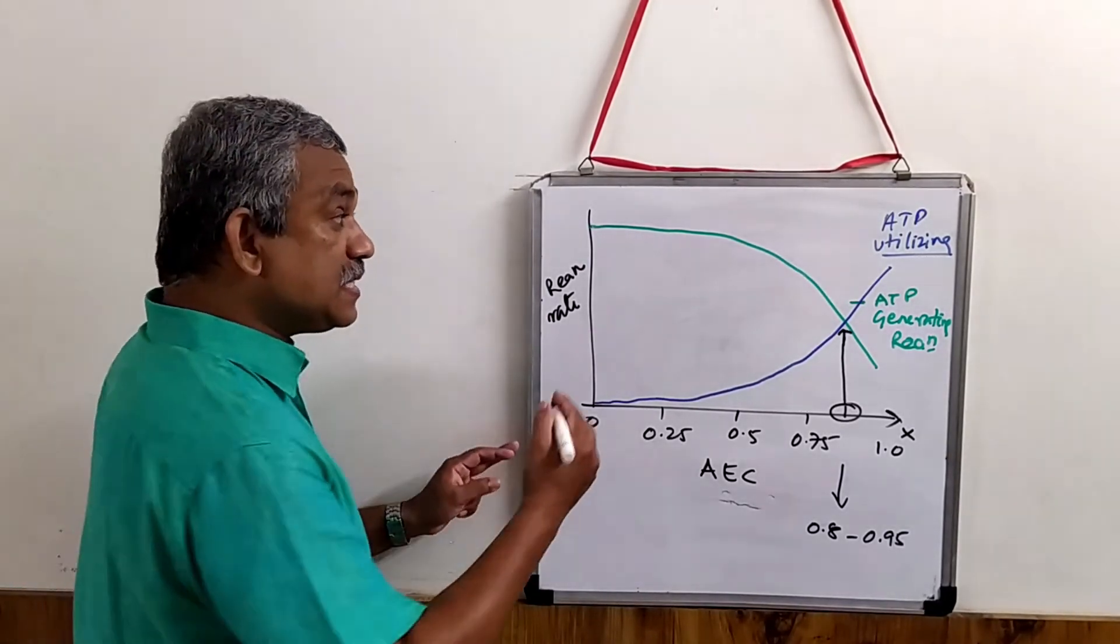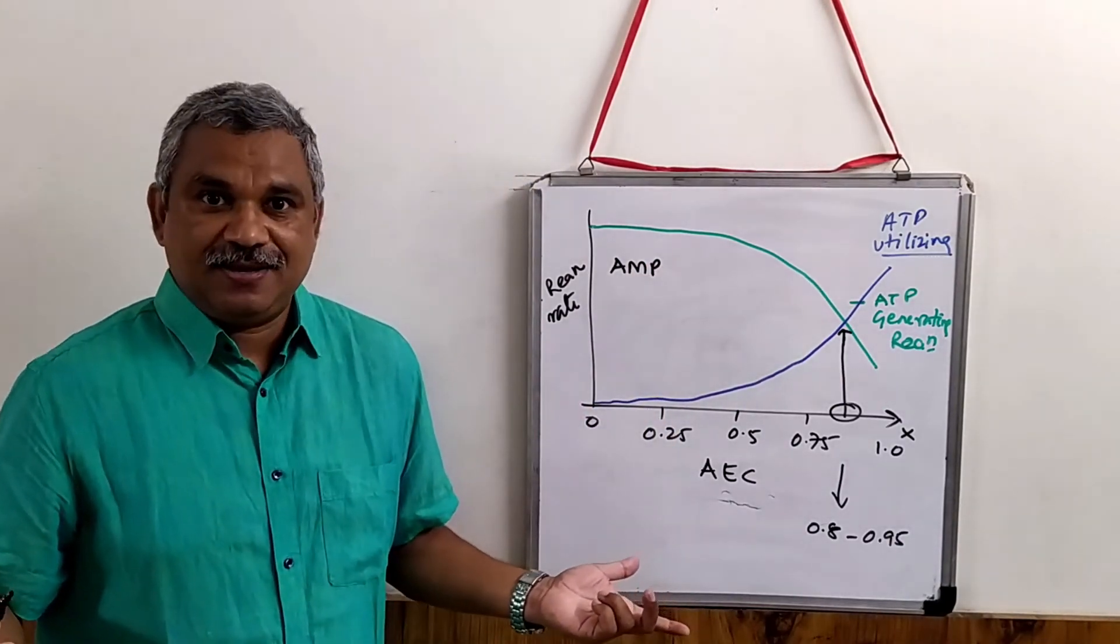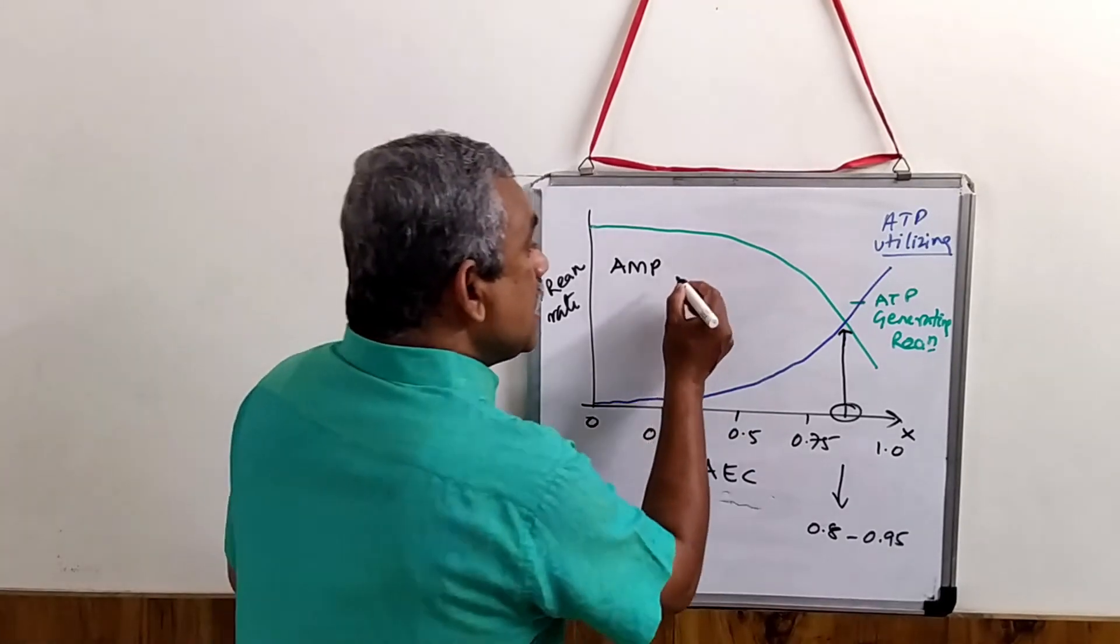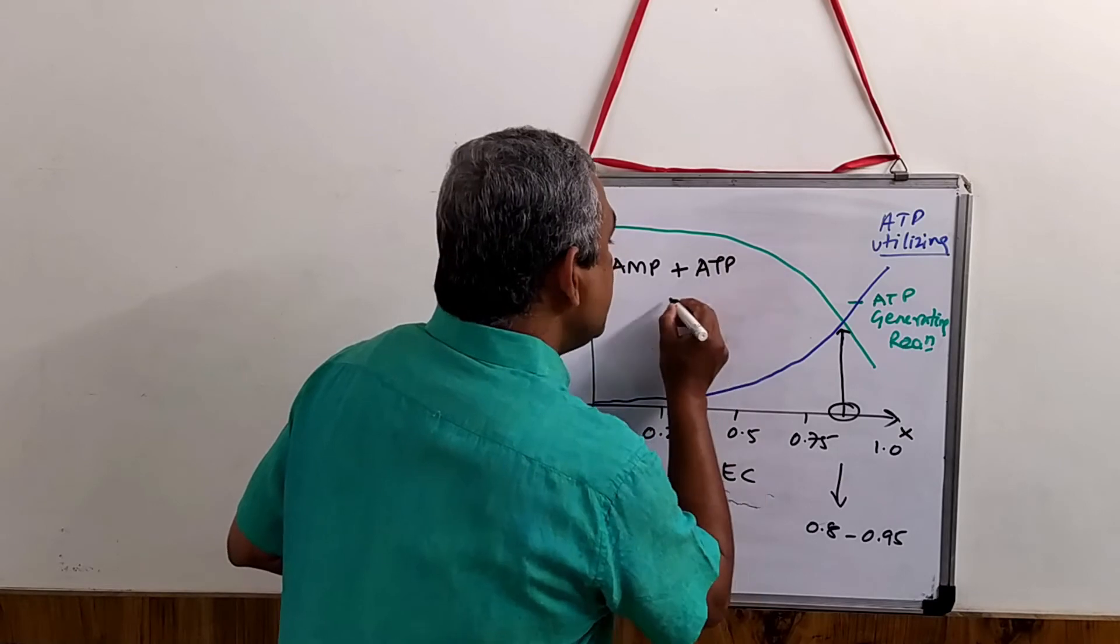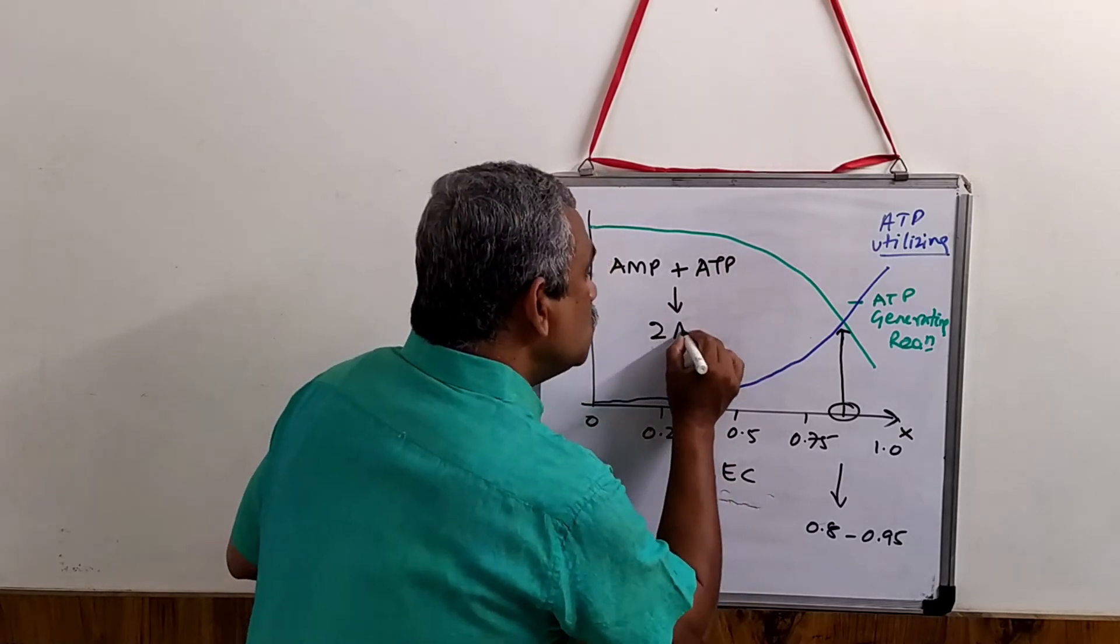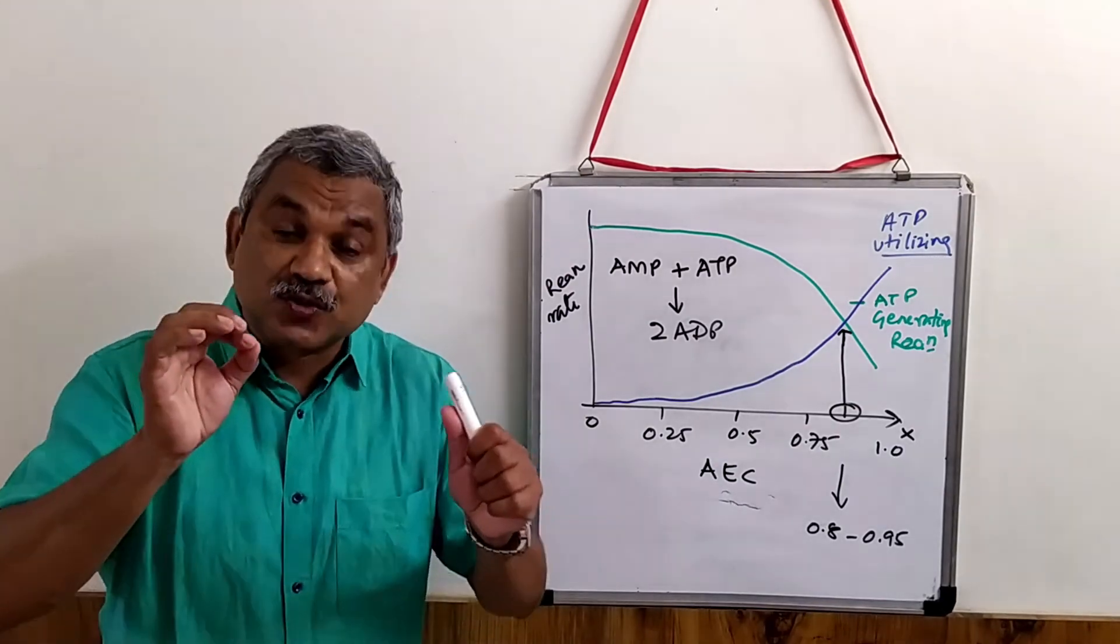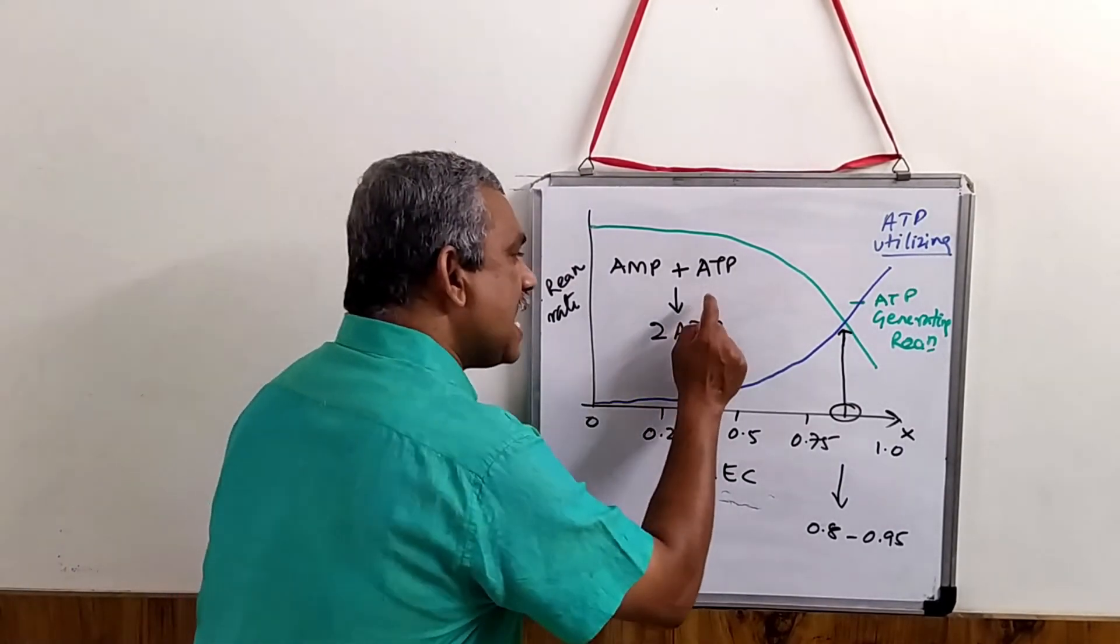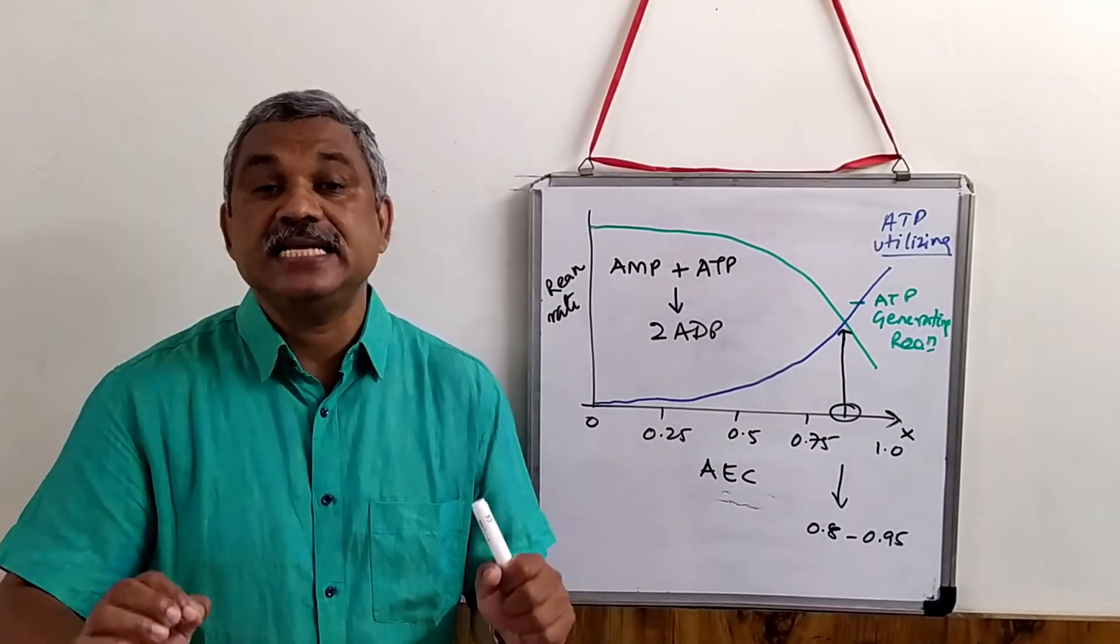When ATPs are hydrolyzed to AMP molecules, remember, they do not have energy. And we need to convert them to energy-rich molecules. How to convert them? Add an ATP molecule and that will give rise to two ADP molecules. ADP has got phosphoanhydride bond. They are high energy compounds. And this is catalyzed by an enzyme known as adenylate kinase.